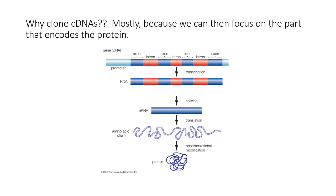So why clone cDNAs? Mostly because then we can focus on the part of the protein that we're interested in, which is the part encoding the protein. If we're starting off with a mammalian gene, we will produce a pre-mRNA that needs to be spliced, capped, and polyadenylated before it can be exported to the cytosol for translation. The final mRNA has all the amino acids encoded in it without the introns and without the promoter, so it's ready to go for protein synthesis. We need to know how to create the DNA form of this molecule so that it can be cloned.